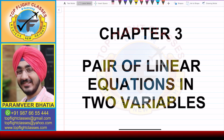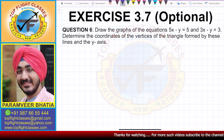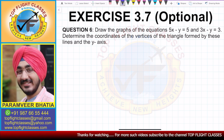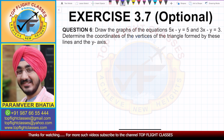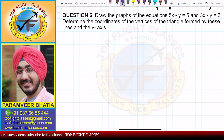Welcome to my channel Top Flight Classes. In this video we'll solve question number six of exercise 3.7, which is the optional exercise. Question number six says: draw the graphs of the equation 5x minus y equal to 5 and 3x minus y equal to 3, determine the coordinates of the vertices of the triangle formed by these lines and the y-axis.